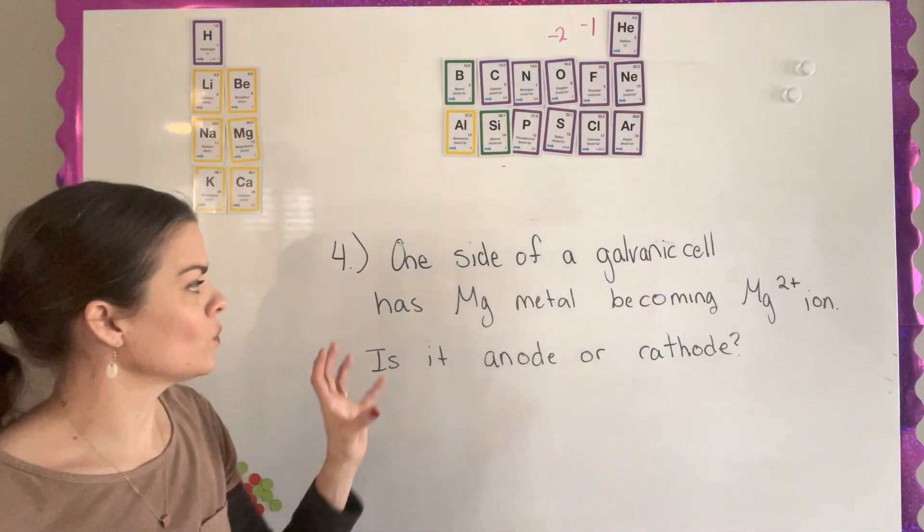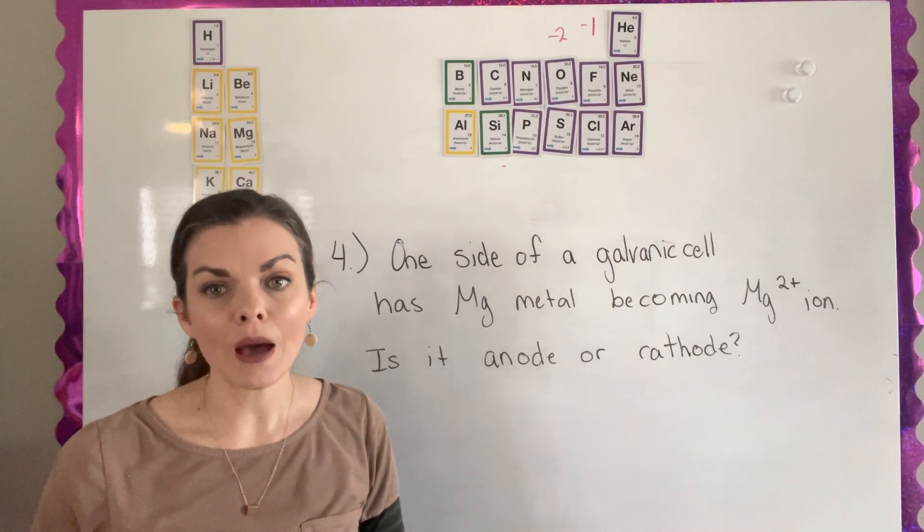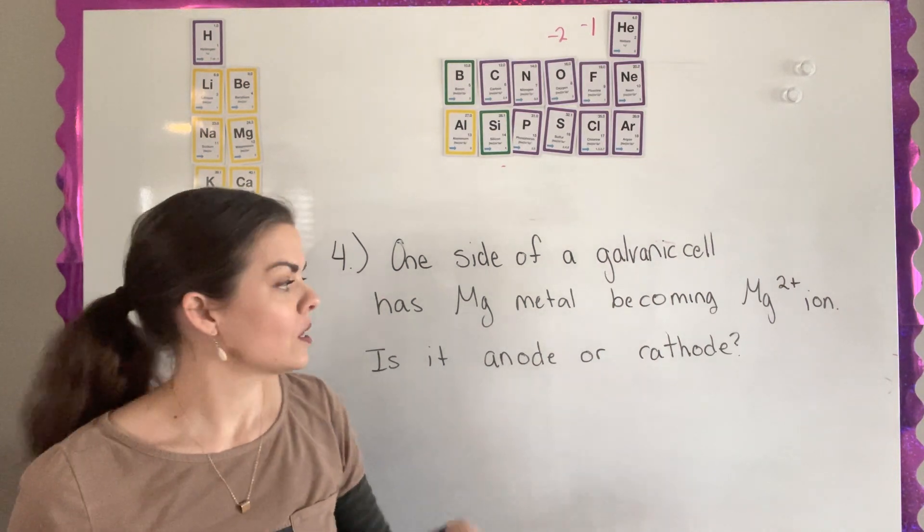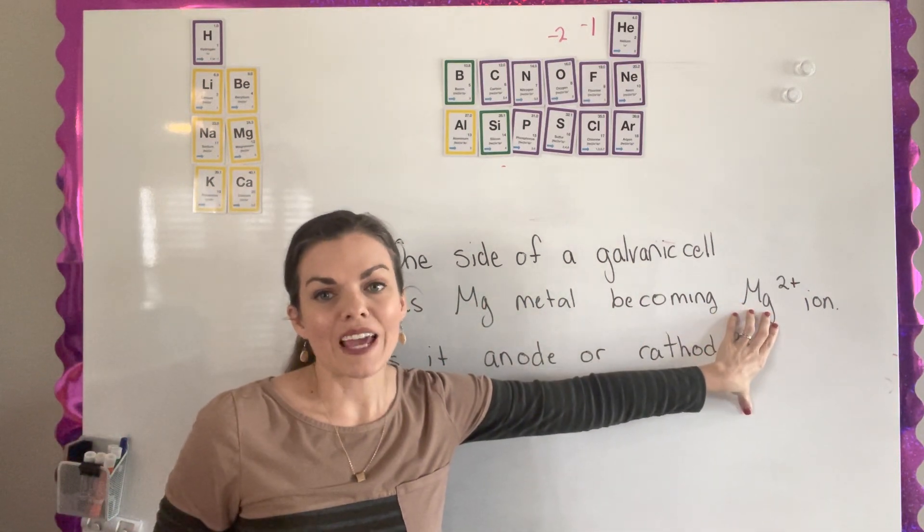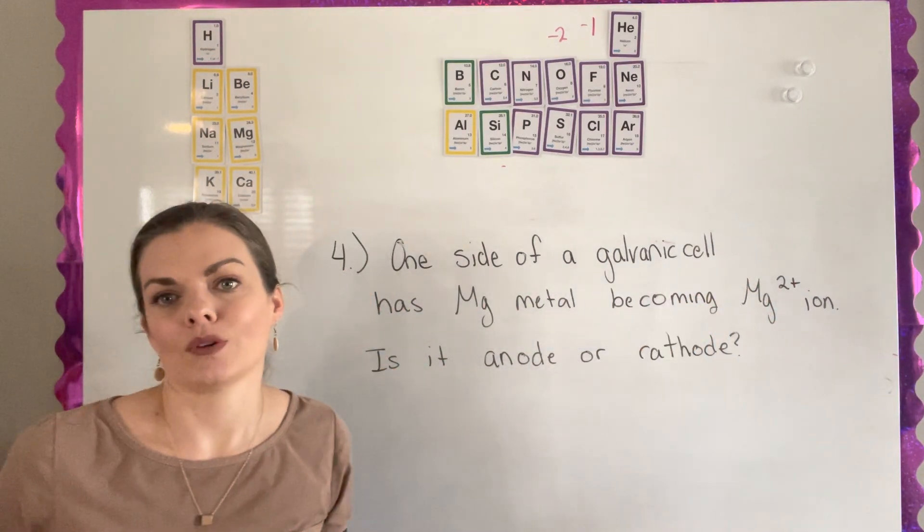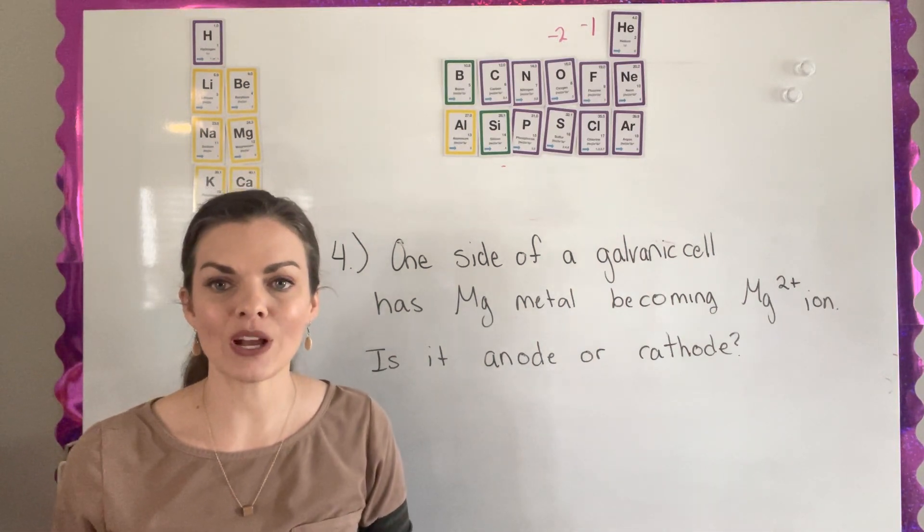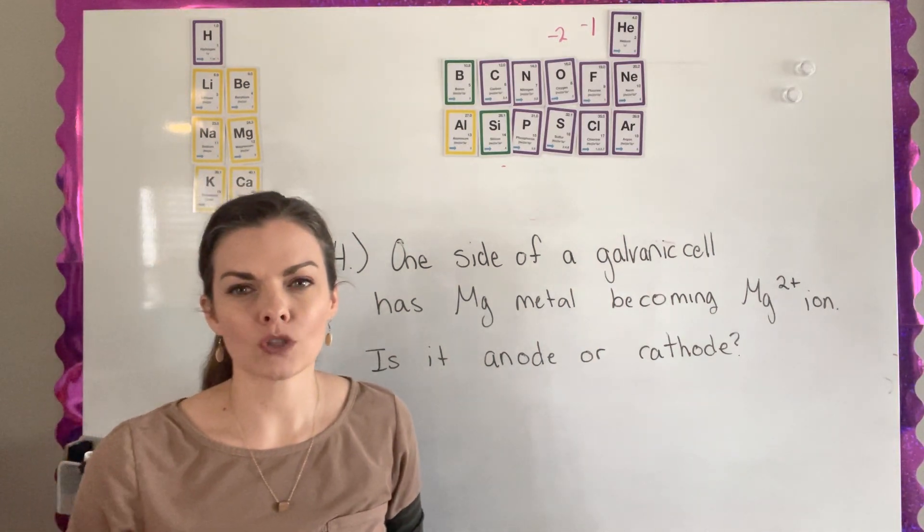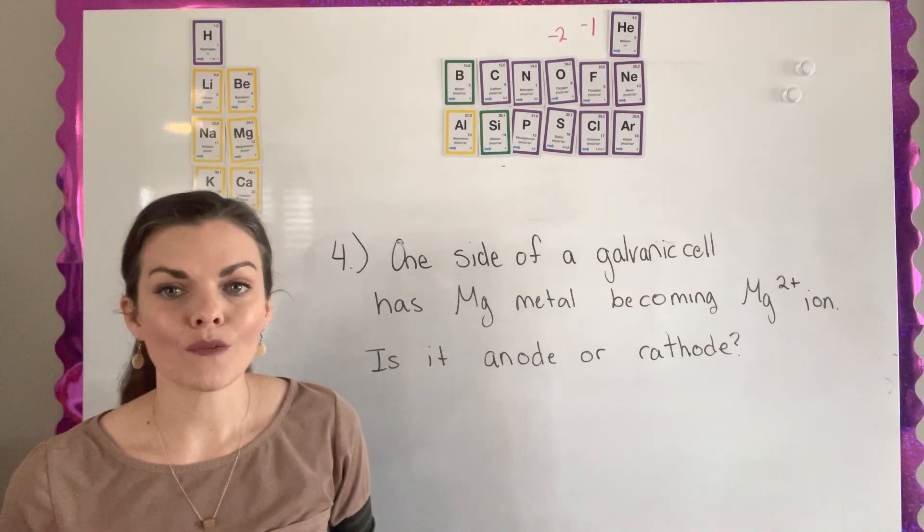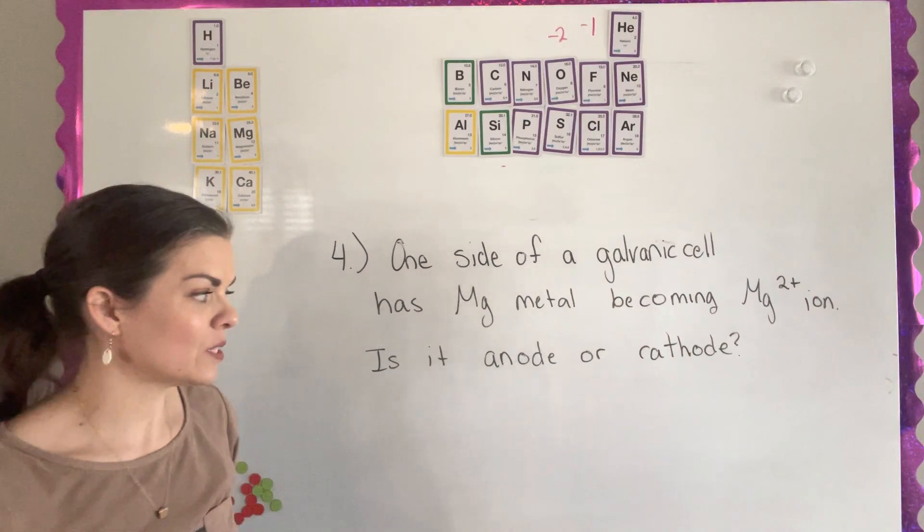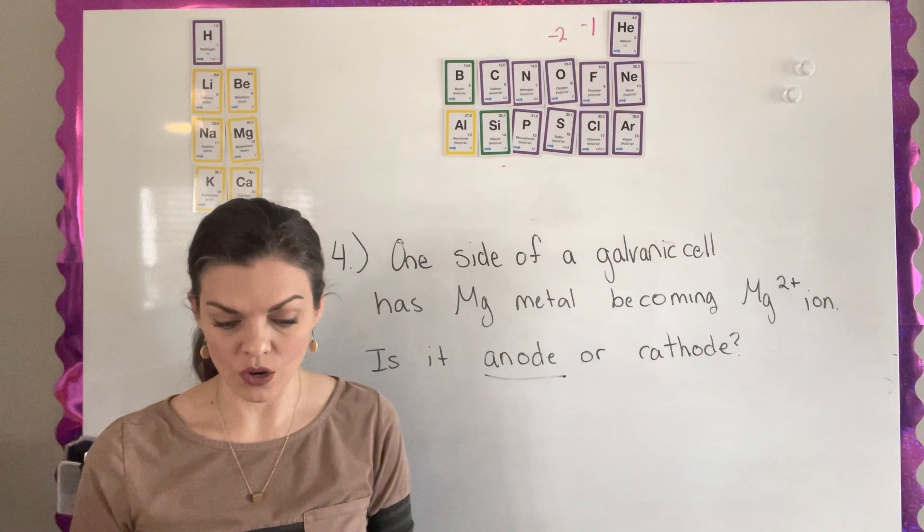Basically on one side, we have some magnesium metal and it's becoming Mg2+. So what is happening between magnesium to Mg2+ is it's actually losing its electrons. It's becoming more positive, losing its negative electrons. In the reading, it should have taught you that when it's losing electrons, that's oxidation, LEO, and that actually takes place on the anode. Oxidation happens on the part of the cell called the anode.